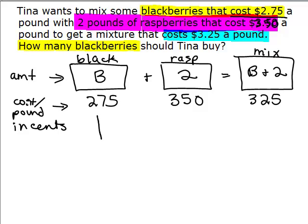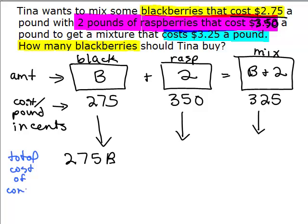Now let's figure out the actual cost of each of these containers. So I've got B pounds of blackberries. It's 275 a pound. So it's going to be 275 times each pound. So this will be 275B. This is the total cost of each container. Plus, I've got 2 pounds, it's 350 for each pound. So that's simply 350 times 2. And for the last one, I've got B plus 2 pounds in the mixture and it's 325 for each pound. So it's 325 times the whole amount in the mixture, B plus 2. So there is the equation that will help us find out how many blackberries to use.